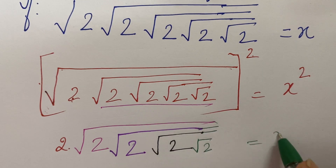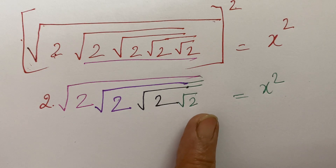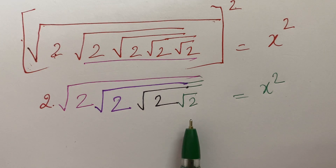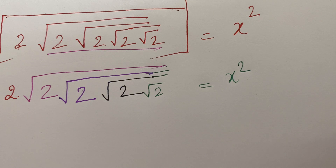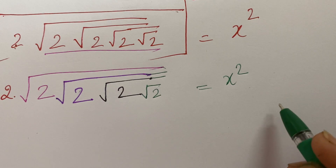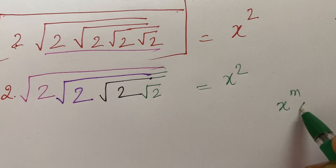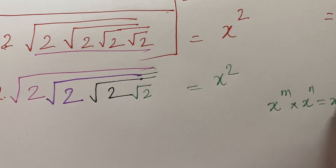Getting that? This is x square. Now we will go from this side and move over to here. We will have to apply the properties of indices. For example, x raised to the power m multiplied by x raised to the power n is equal to x raised to the power m plus n.